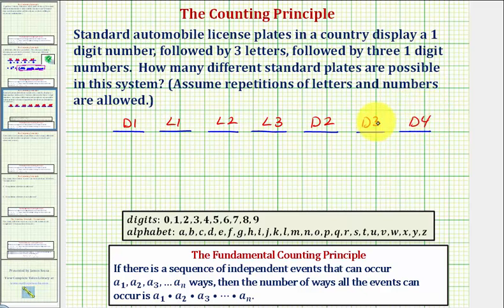Now if we can determine the number of ways each of these independent events can occur, the product of the number of ways will give us the total number of outcomes, or in this case, the total number of different standard license plates.